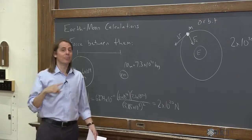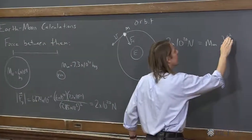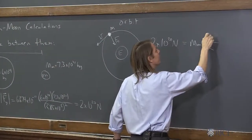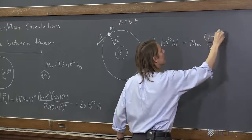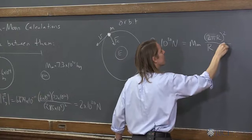because I know the period of the Moon, right? It's about a month. What is it, 28 days, 27 days? So the period, it's 2 pi r, the circumference of the orbit, and the v was squared, over the period squared.